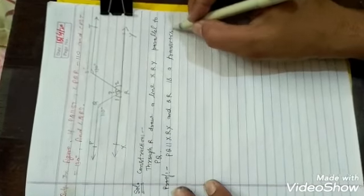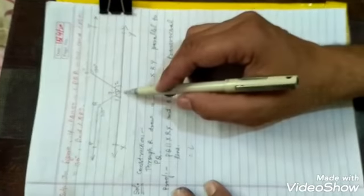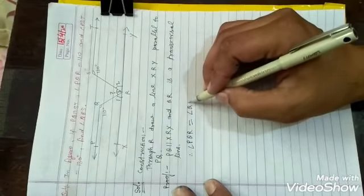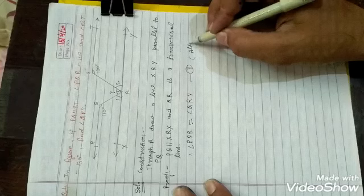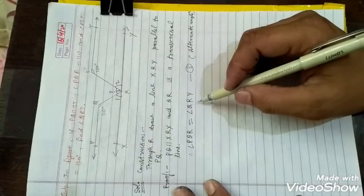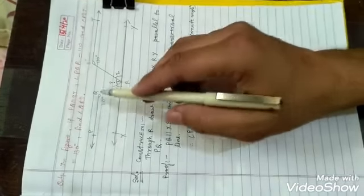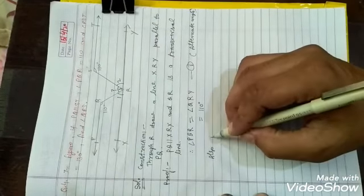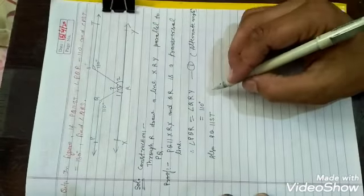Since PQ is parallel to line XRY and QR is a transversal line, angle PQR is equal to angle QRY — equation number 1. These are alternate angles. Both are equal to 110 degrees because angle PQR is 110 degrees. Also, PQ is parallel to ST as given in the question.